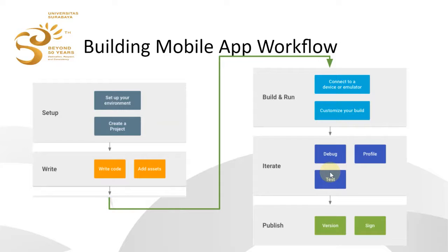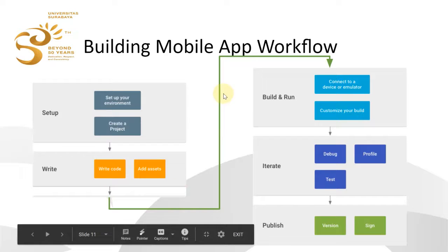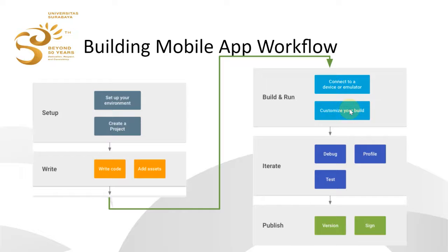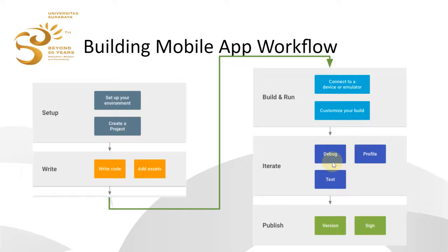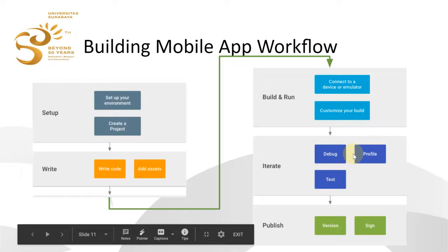Before creating a new project, you should understand the native mobile app building workflow. You begin by setting up your environment — proxy, directory, and installing everything. Then you create a project, write the code, add assets like images and sounds, and then test it by connecting to a device or emulator. You customize your build to work well on different devices, then debug and test. You repeat this iteration multiple times.